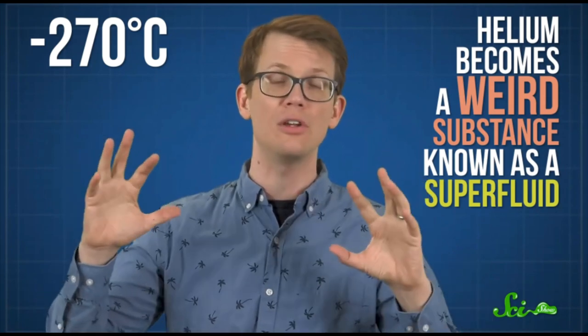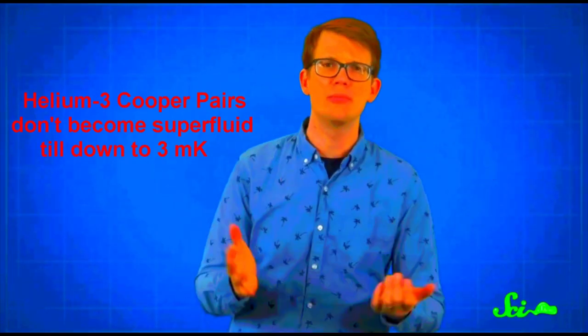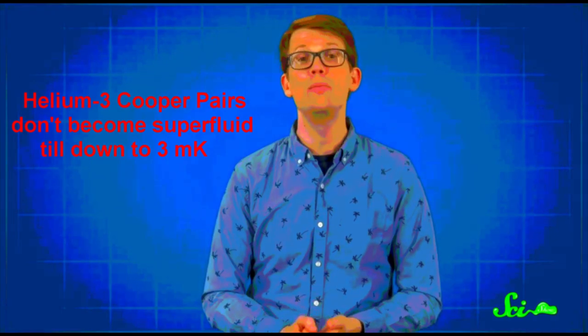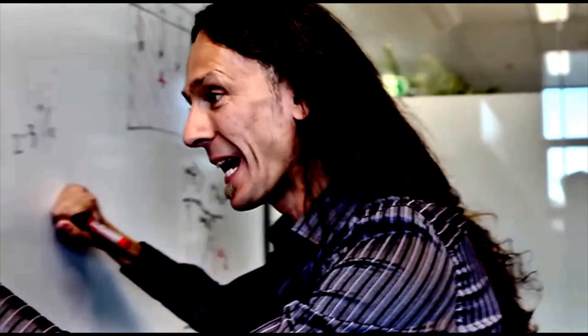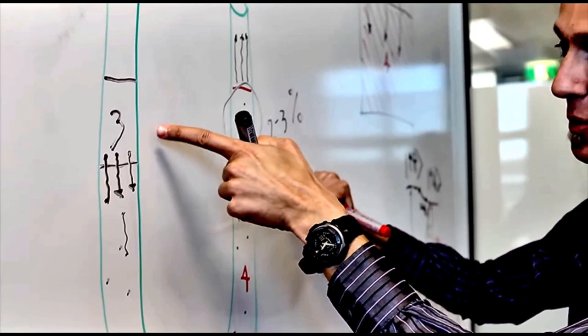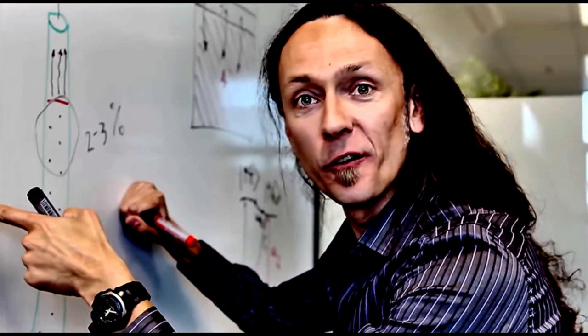Because at that temperature, helium becomes a weird substance known as a superfluid. By contrast, helium-4 allows you to go down to 2.1 Kelvin, because the entropy is increasing when you take atoms from a pure phase into a dilute phase.